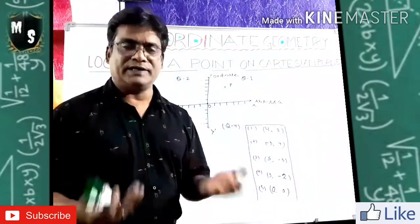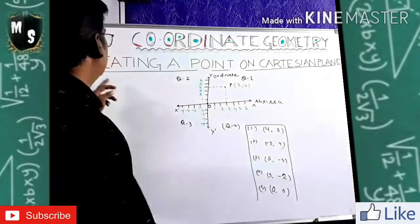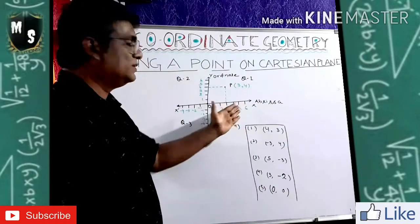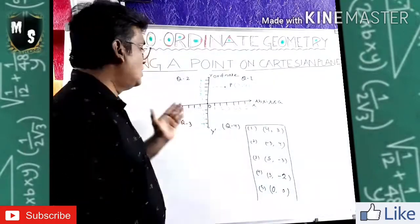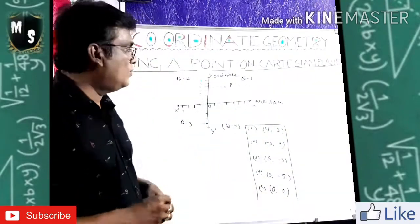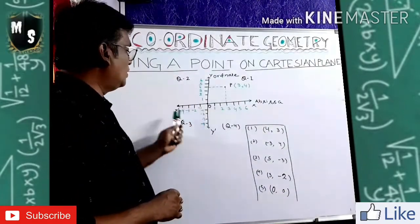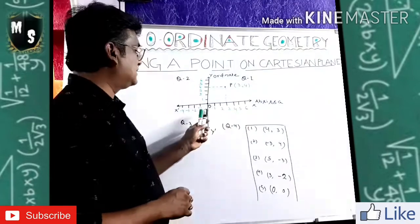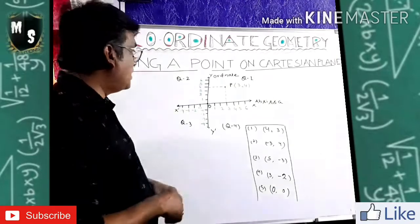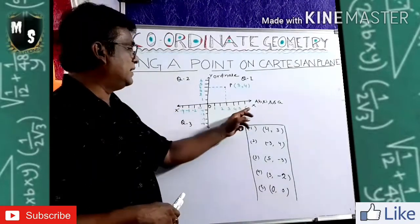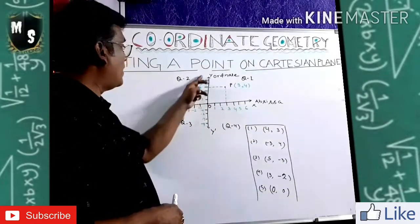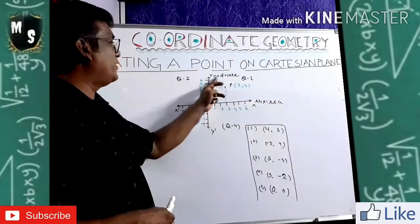Now come to locating a point on the Cartesian plane. The intersection of the horizontal and vertical lines is the Cartesian plane. Both number lines intersect each other at zero, so zero is called the origin. The horizontal line X-dash-X is called the abscissa, and Y and Y-dash is called the ordinate. It divides the plane into four quadrants.